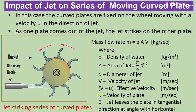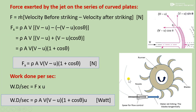Theta is the angle made by the tangential component of the jet at the outlet, as we will see in the next slide. From the diagram, the tangential component of velocity at outlet is V minus U, making angle theta with the horizontal. So its horizontal component is V minus U cos theta.